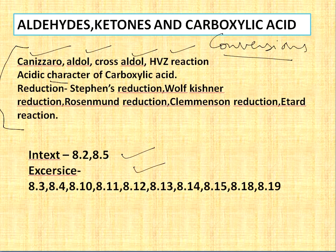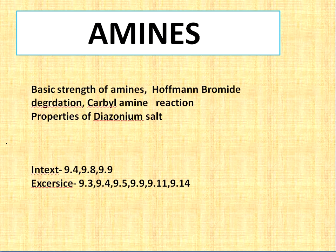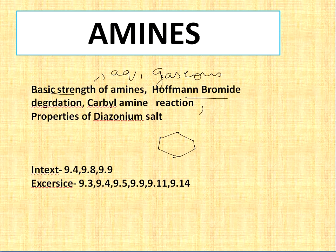Amines is a small but scoring chapter. First, learn the basic strength of amines in both aqueous and gaseous states. Hofmann bromamide reaction is an important part. Also learn carboxylic acid reactions and properties. The diazonium salt (N2+Cl-) is also an important topic in this chapter.